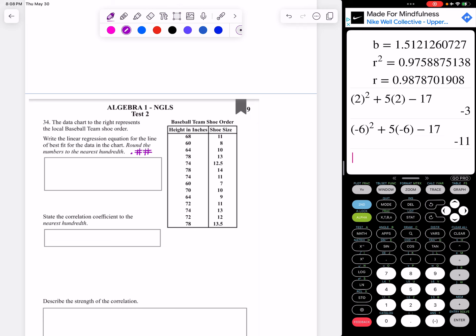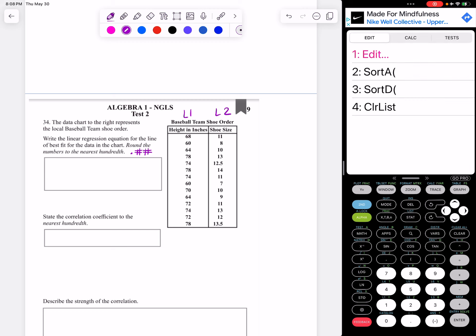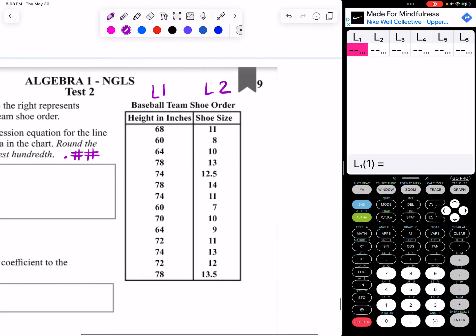So this is all stat. We're going to do L1, L2. So we're going to go to edit, make sure the data is cleared. So your L1 and L2 should be totally empty. And then we type it in very slowly.